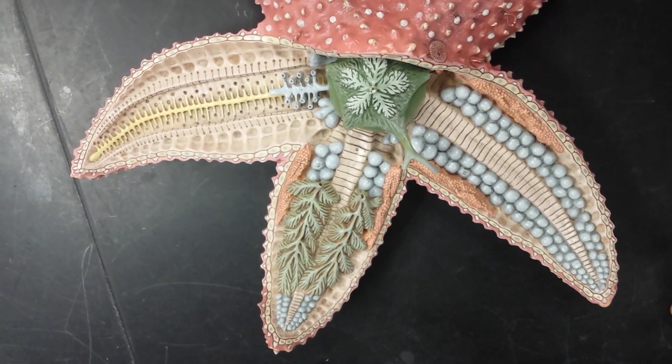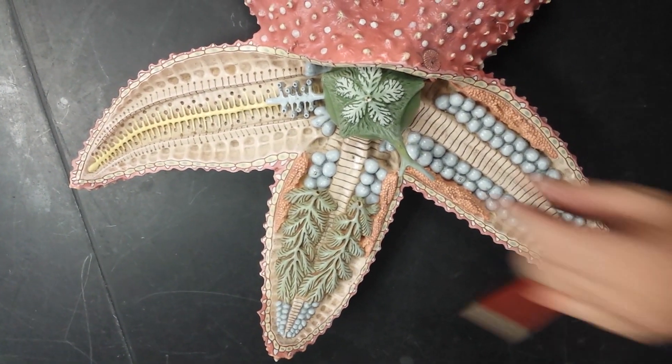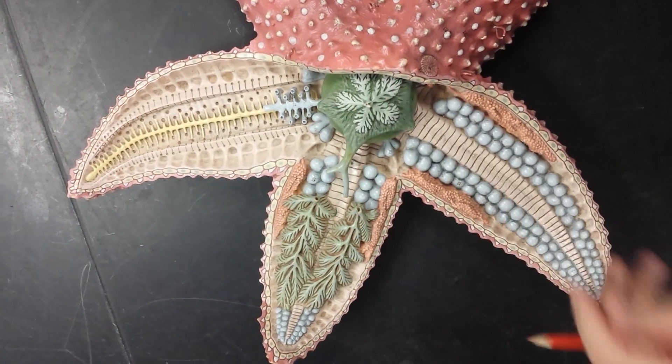We have kingdom Animalia, phylum Echinodermata, class Asteroidea. We'll start with the aboral surface.